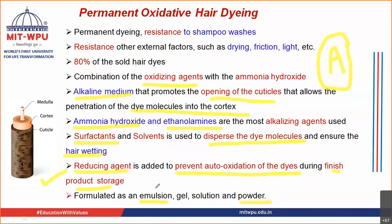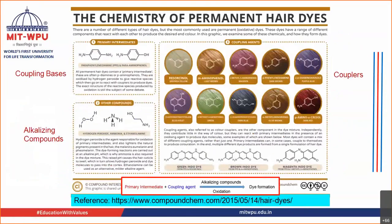Now let us look at this poster, which explains the permanent hair dye system in just one slide. What does this permanent hair dye system consist of? It basically consists of primary intermediates — also known as coupling basis. These primary intermediates are the first compound present. Just for an example, one of the examples is paraphenylenediamine (PPD).